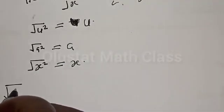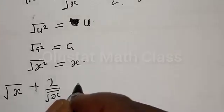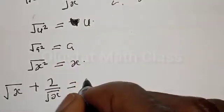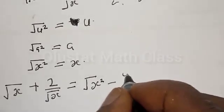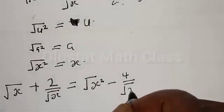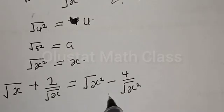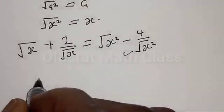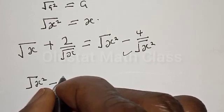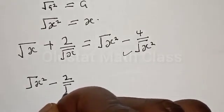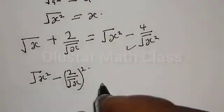Our equation now becomes: square root of s plus 2 divided by square root of s, equal to square root of a squared minus 4 divided by square root of a squared. Let's try to factorize the right-hand side. We have square root of a squared minus 2 divided by square root of s, all squared.